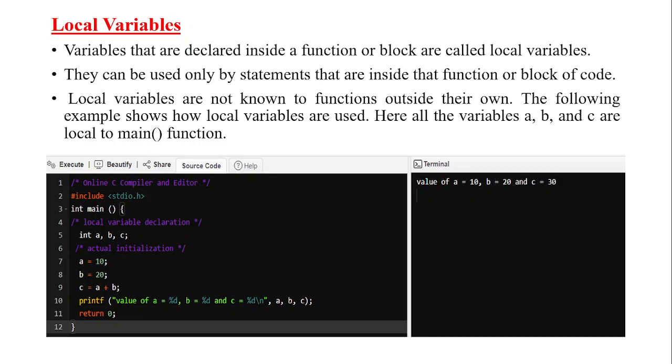Here all the variables A, B, and C are local to main function. So if you see this example I have main. I have given A, B, C. I have initialized the value as A as 10, B as 20 and I have C equal to A plus B. So now if you want to display the value I will get value of A, 10, B, 20, C, 30. So the scope lies within this main function.